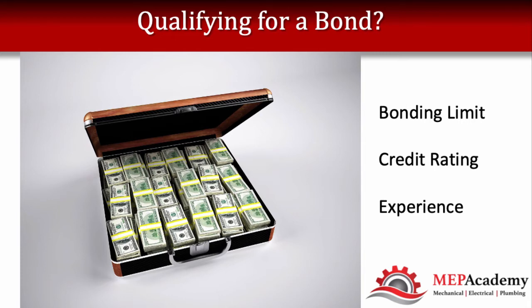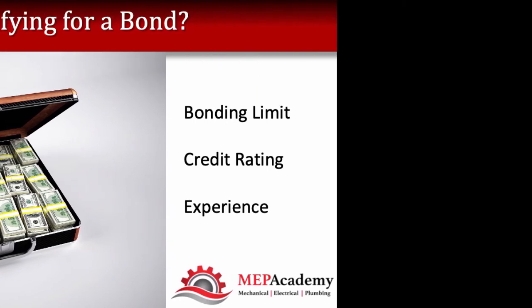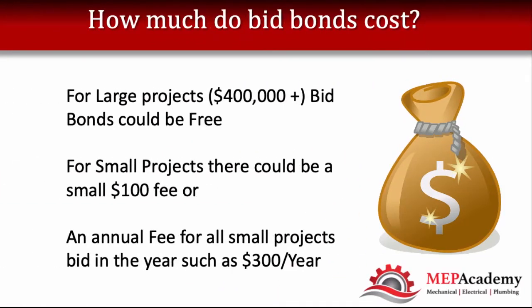The bonding company will also track how much bond exposure you have already outstanding — that is, any work currently under bond coverage that is yet to be completed, releasing the bond of any further risk. How much do bid bonds cost? For projects over $400,000, the bid bond could be free. If you have a good relationship with your bond company, there won't be any charge. For smaller projects, there may be a nominal fee of a hundred or a couple hundred dollars. It's possible they have an annual fee which covers all the bid bonds you'll need for the year — check with your bonding company to discover how they structure their fees.